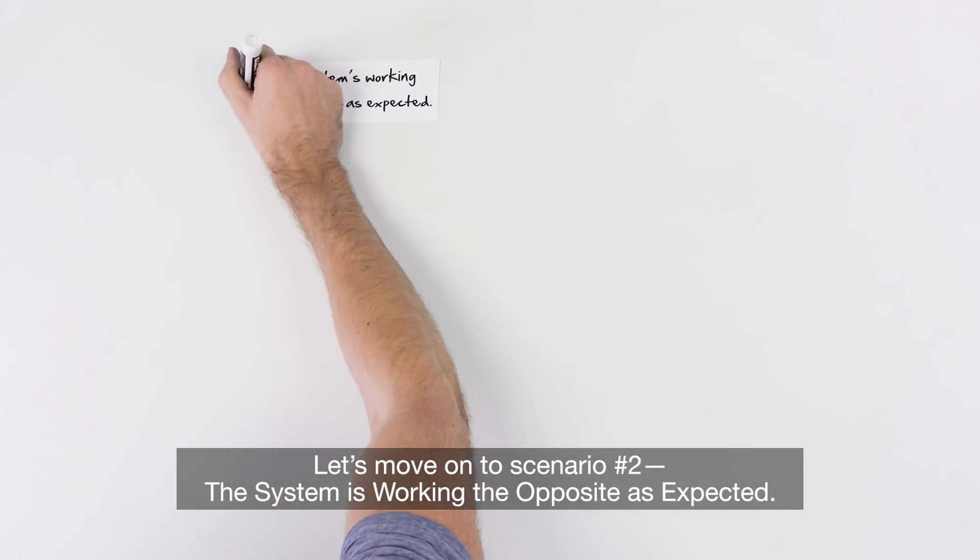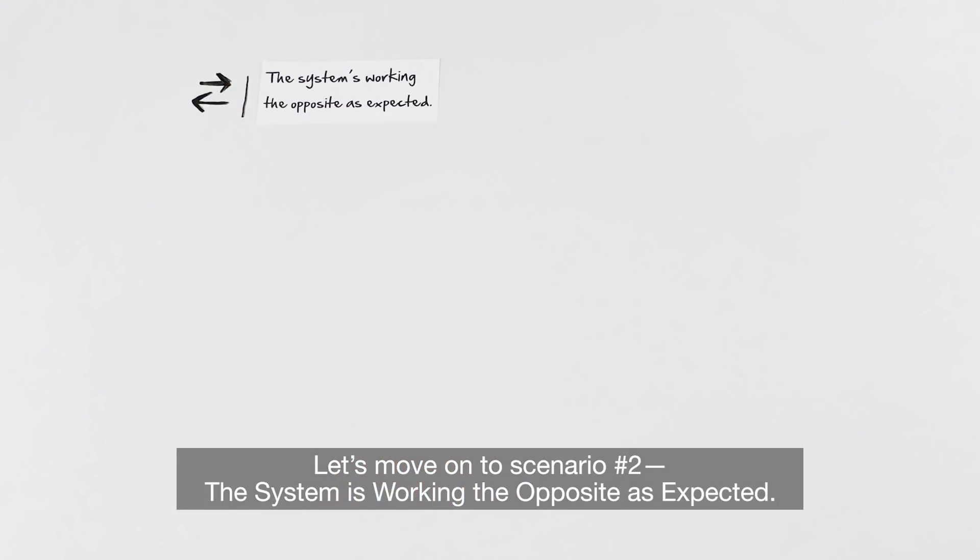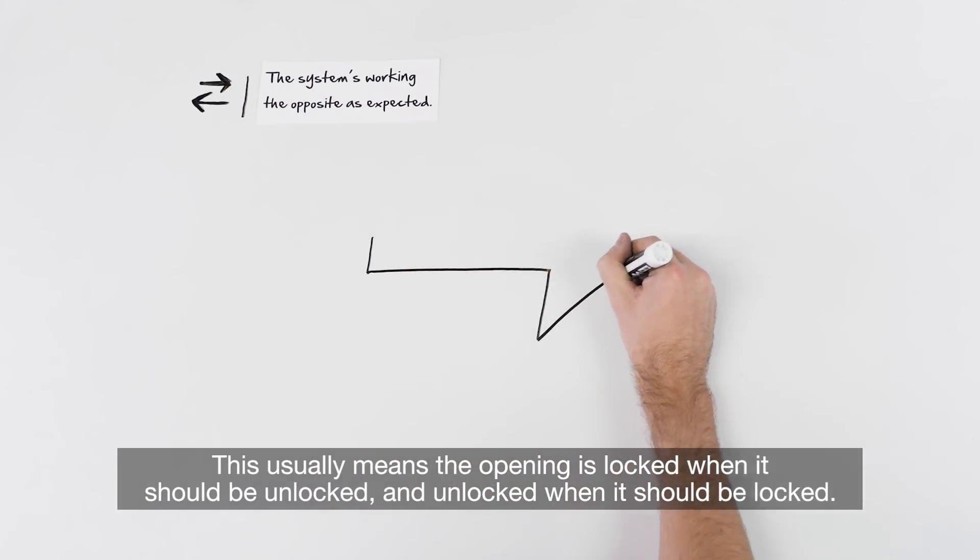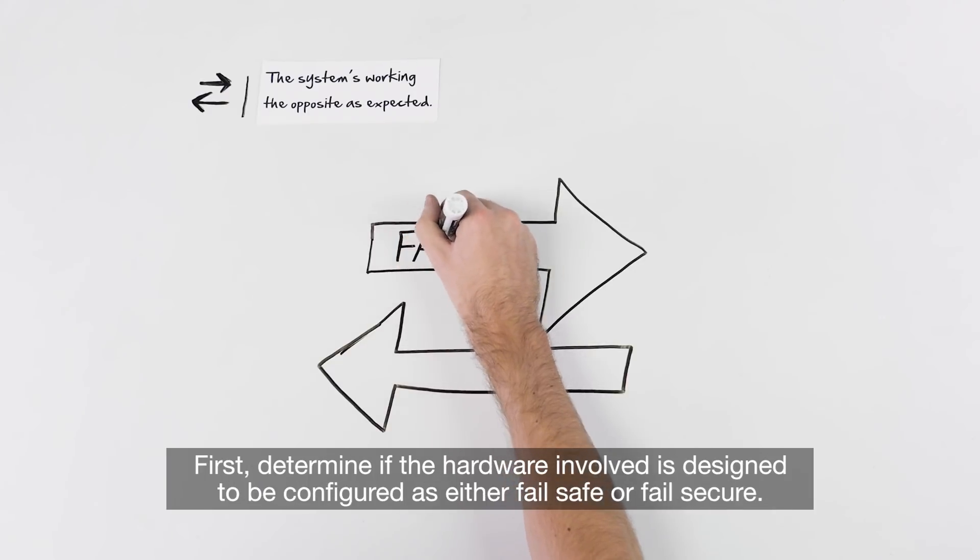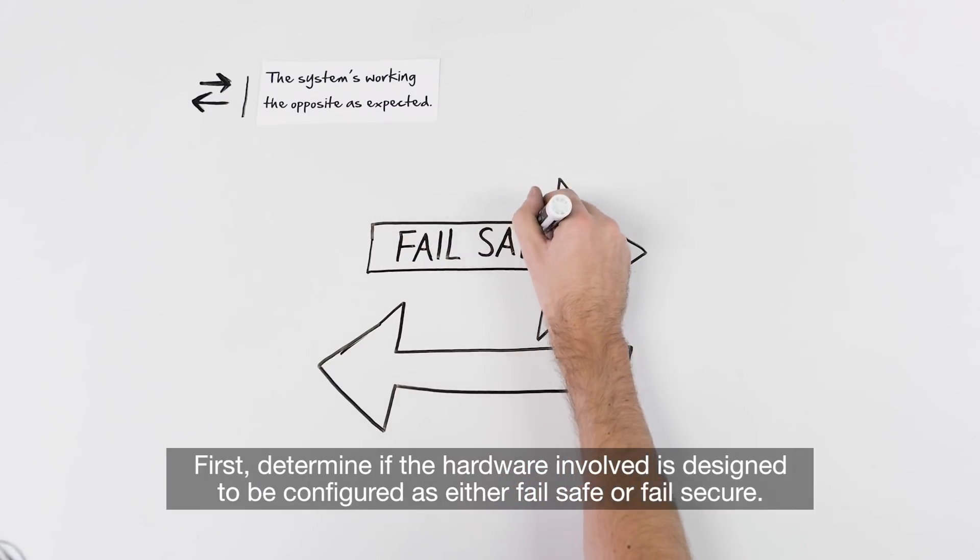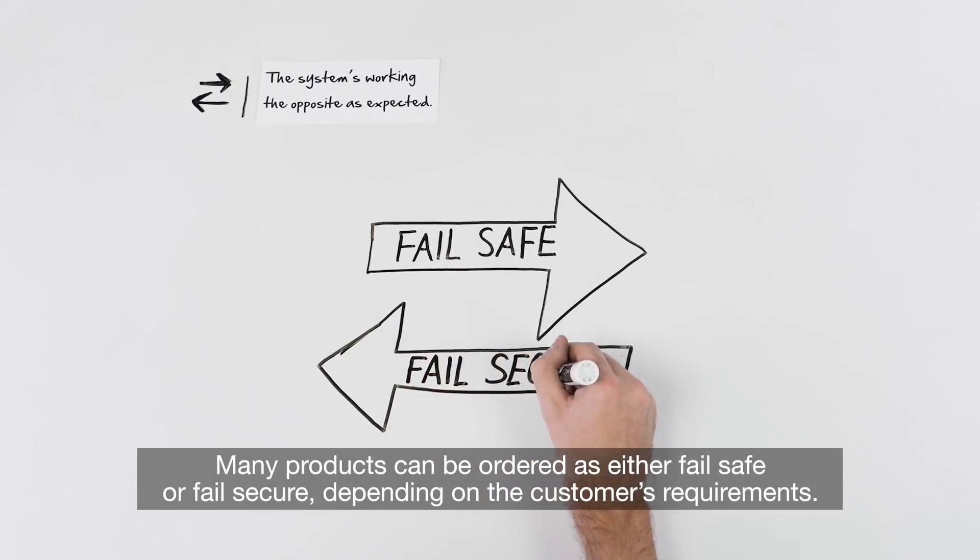Let's move on to scenario number two. The system is working the opposite as expected. This usually means the opening is locked when it should be unlocked, and unlocked when it should be locked. First, determine if the hardware involved is designed to be configured as either fail-safe or fail-secure. Many products can be ordered as either fail-safe or fail-secure, depending on the customer's requirements.